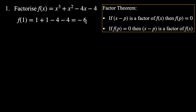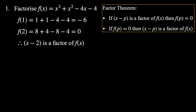The next value we could try is x = 2. So f(2) = 2³ + 2² − 4(2) − 4 = 8 + 4 − 8 − 4 = 0. So we have a value of x that makes the function equal 0, and we can say that x minus 2 is a factor of f(x). Now we can use polynomial division to fully factorize this function.